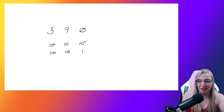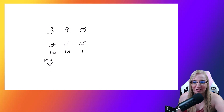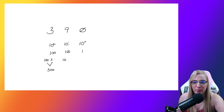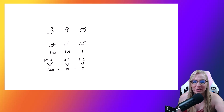This is where the magic comes in. We take the positional values and multiply them by the actual digits. So 100 times 3 gives us a value of 300. Then 10 times 9 gives us 90. And 1 times 0 gives us 0. We then sum all these together — 300 plus 90 plus 0 — which gives us 390.